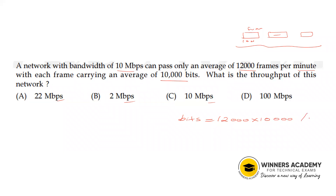Converting per minute to per second: 12,000 frames × 10,000 bits ÷ 60 = 2 megabits per second. So the throughput is 2 megabits per second. Total bits transmitted divided by 60 seconds gives us the answer.